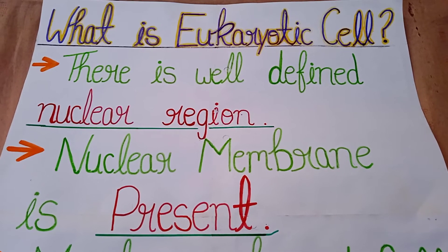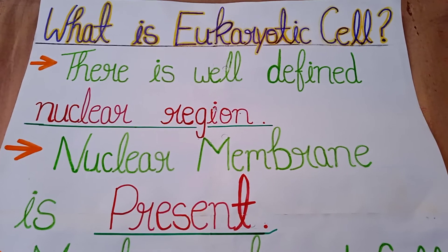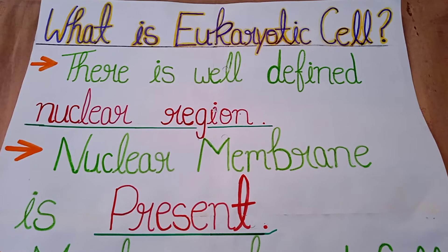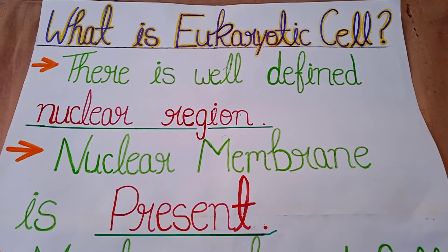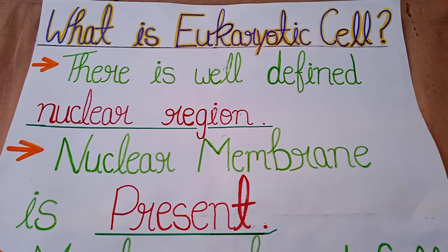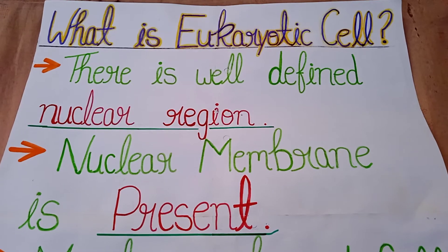The second point is nuclear membrane is present. In a eukaryotic cell, nuclear membrane is present. Eukaryotic cell mein nuclear membrane present hoti hai.